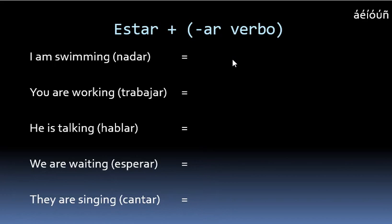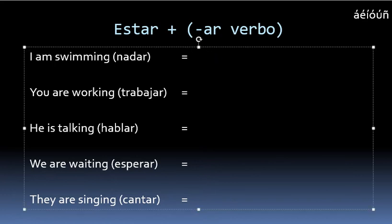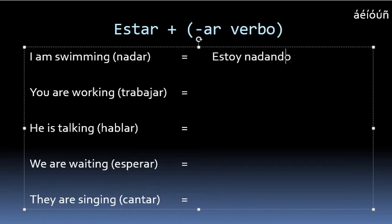In the case of AR verbs, what you would do is take that AR ending and change it to -ando, A-N-D-O. So to say the phrase 'I am swimming,' you could say estoy nadando.